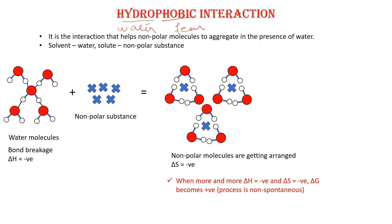Now what happens when a non-polar substance is added in water? Normally when there is no non-polar substance in the water, the water molecules are bonded with other water molecules. As soon as any non-polar substance is added in the medium, water molecules start surrounding the non-polar substance, all bonded with each other around it.